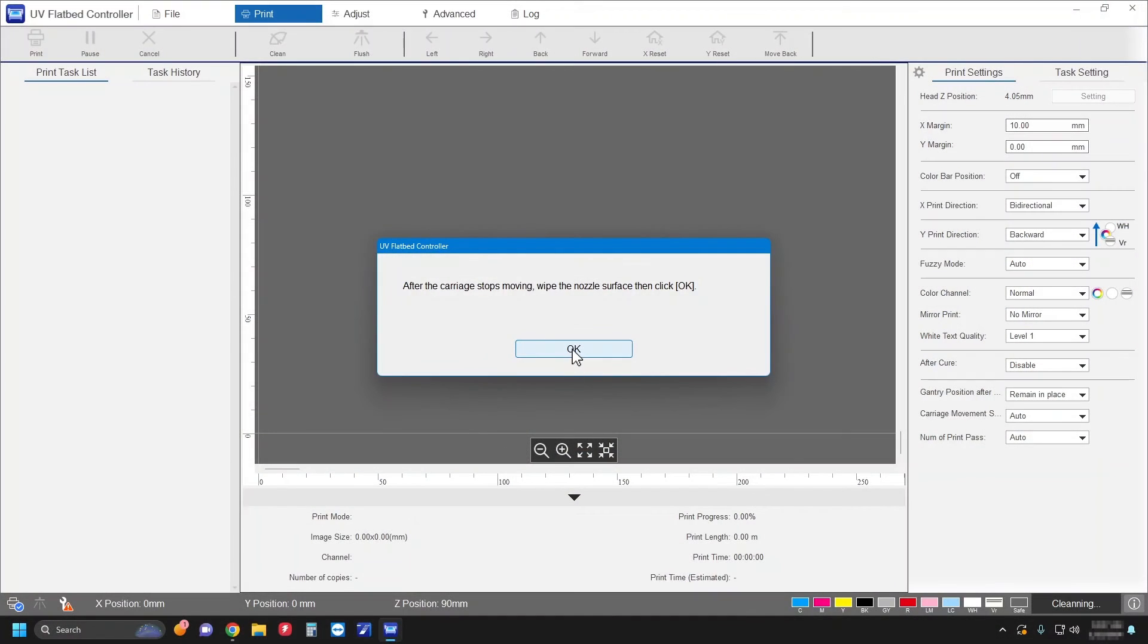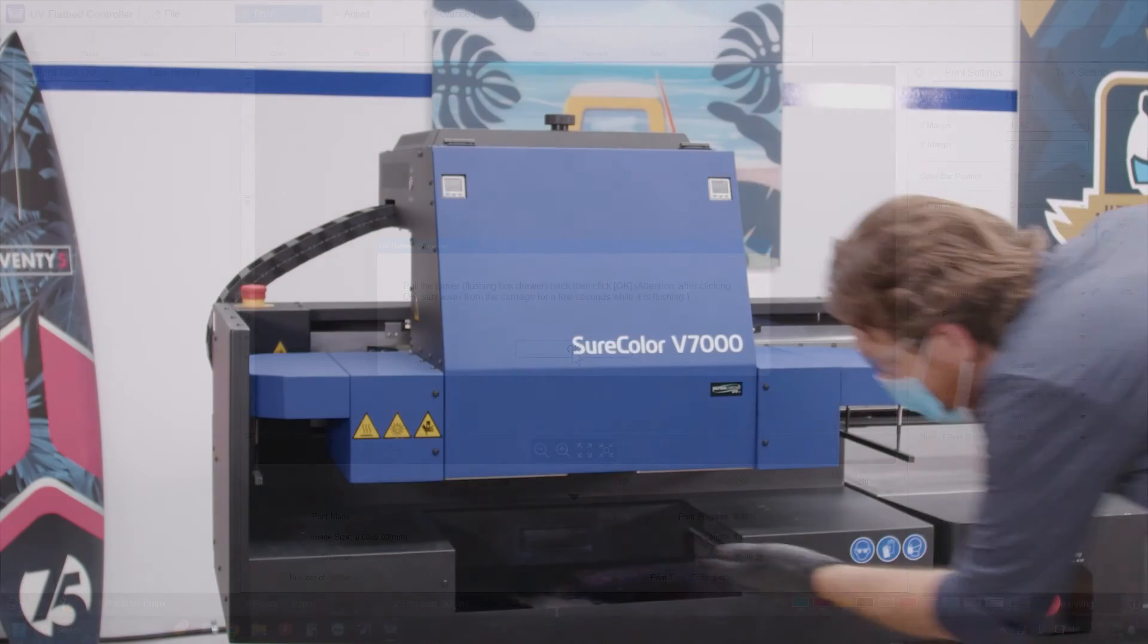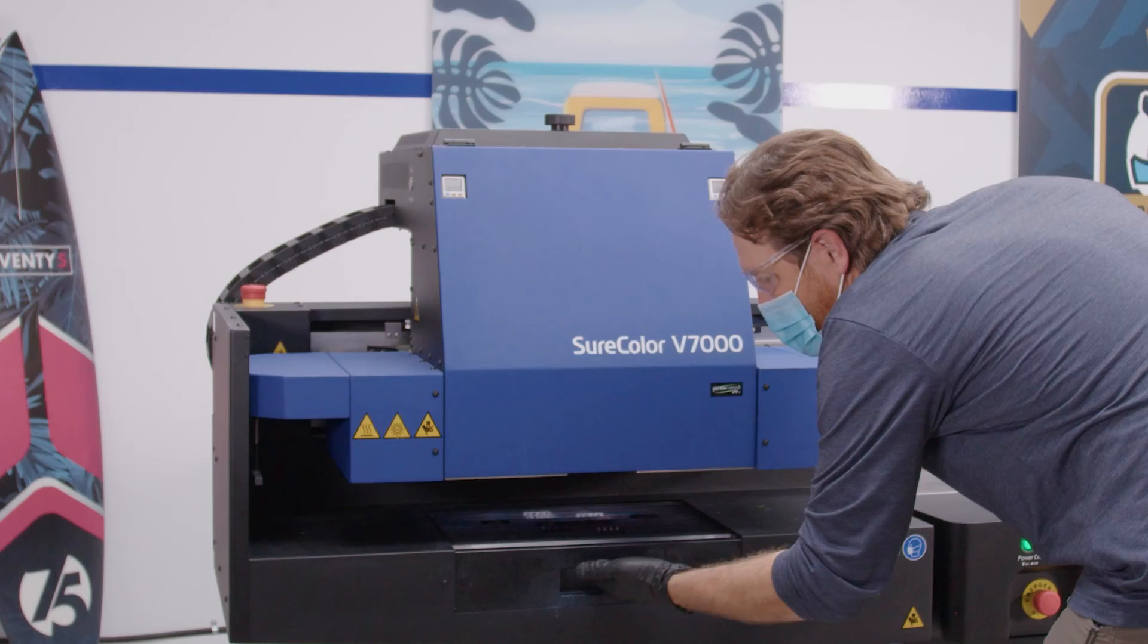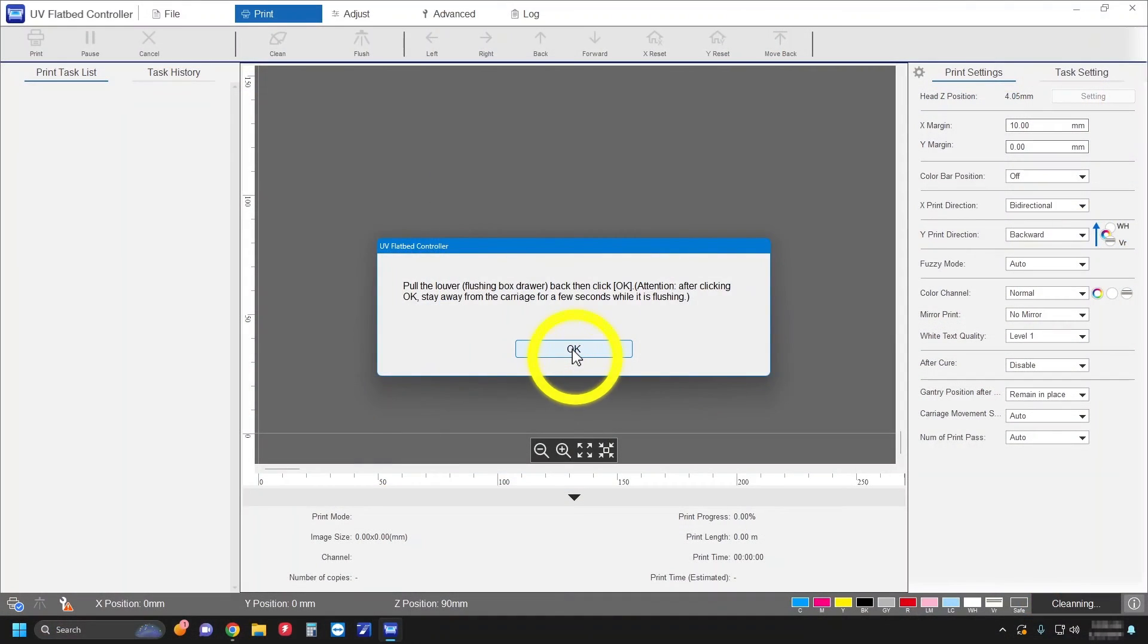When you're done, click OK. When you see this message, move the flushing box to the front of the ink receiver. Then click OK.